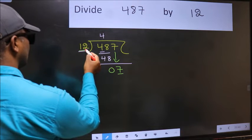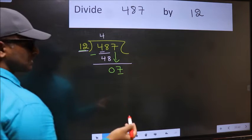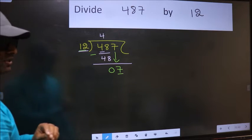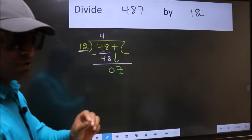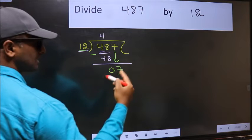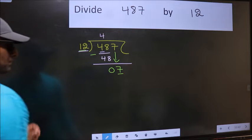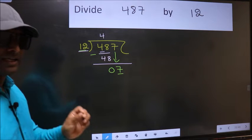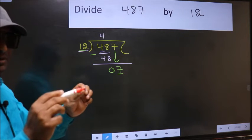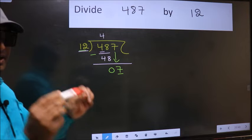After bringing down 7, this is where the mistake happens. We have 7 here and 12 there. Since 7 is smaller than 12, many people directly put a dot and take zero — which is wrong. Why? Because you just brought this number down, and in that same step you cannot also put a dot and take zero. Bringing the number down and putting a dot and taking zero should not be done in the same step.